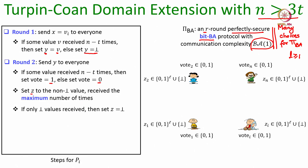Each party P_i also sets Z to be the non-bot value received the maximum number of times during round 2. Remember, when parties are exchanging Y, a candidate Y could be bot as well — some parties might send Y as bot, others as an L-bit string. Z is set to the non-bot value, if any, received maximum number of times. Z_i will be a string of length L bits if there is such a maximum; if all parties communicated bot as their Y value to P_i, then Z_i will be bot.